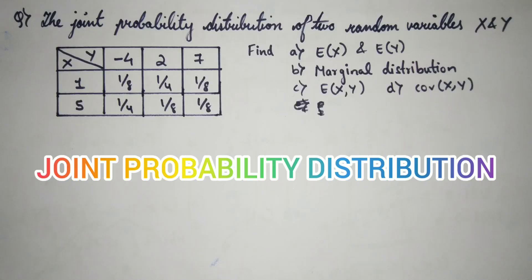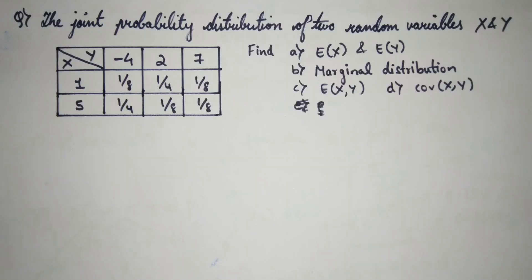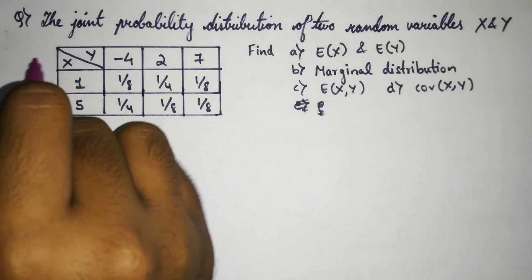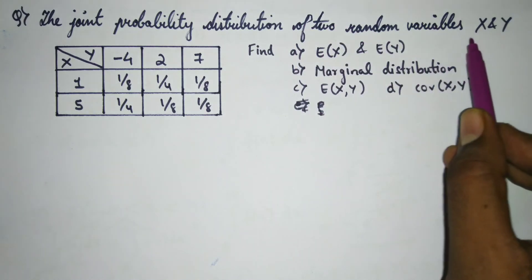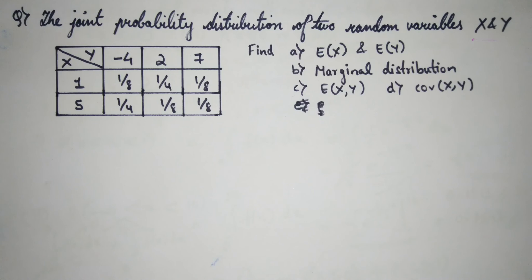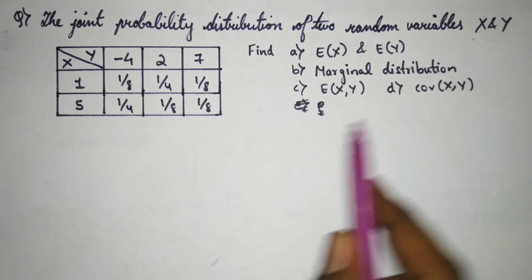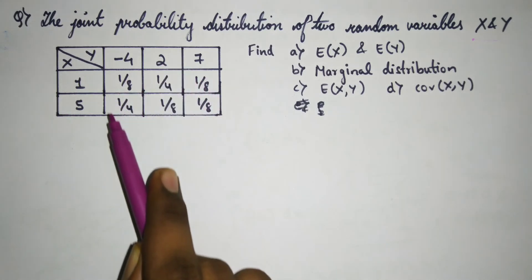Hello guys, welcome back. In this video we will be discussing about the joint probability distribution. Here is the question: find the joint probability distribution of two random variables X and Y. As we know, joint probability distribution is considered for two random variables. The probability distribution table is given.